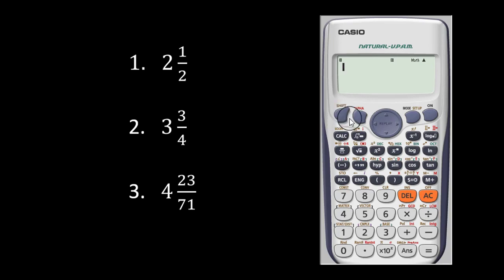So you press your shift and then your fraction key. And then you can now key in 3. Then shift right to the numerator. Then you key in 3. And then scroll down to the denominator. Then you key in the number 4. Then you press equal to.